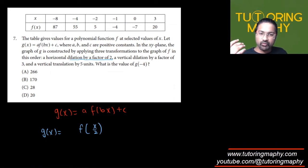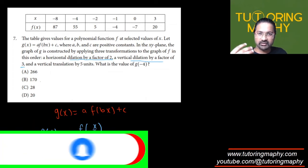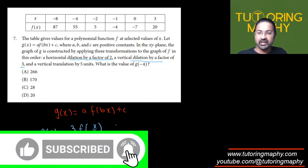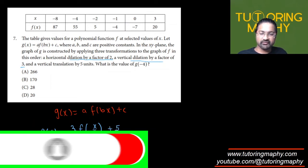Then they talk about the vertical dilation by a factor of three. It means that it is just three times of it. So we just multiply three. And finally, there's a vertical translation of five, which means that you just add five to it.